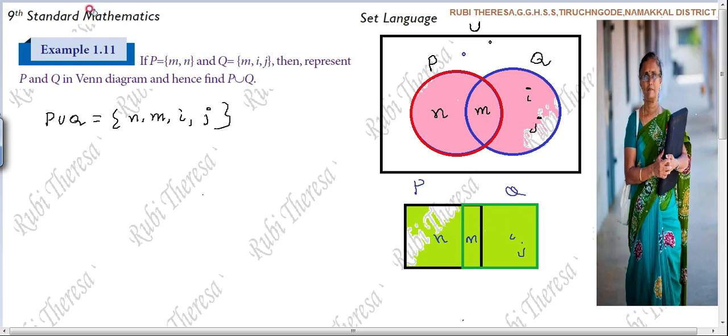Right? P union Q. This is nothing but P union Q. Pictorial representation. So hence find P and Q. So this is the answer. Hence find P union Q. So just you are taking and writing this. That's all. Do you follow or not? Just let me find it out from the sets itself. Then let me do that.